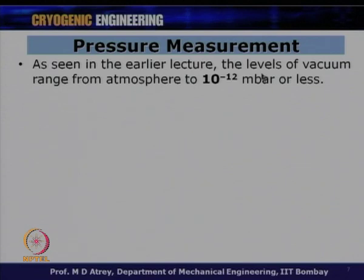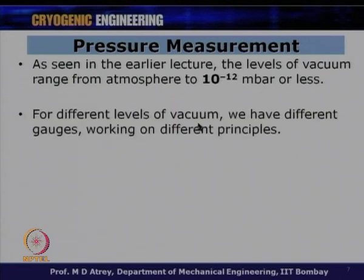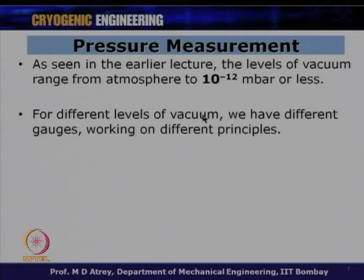The levels of vacuum range from atmosphere to 10⁻¹² millibar or less. For different levels of vacuum we have different gauges working on different principles. This is most important: if you have a level up to 10⁻³ or 10⁻⁴, a particular gauge is used; between 10⁻⁴ and 10⁻⁶ a different principle applies; and for very low vacuum like 10⁻⁹ to 10⁻¹¹, yet another type of gauge is needed.